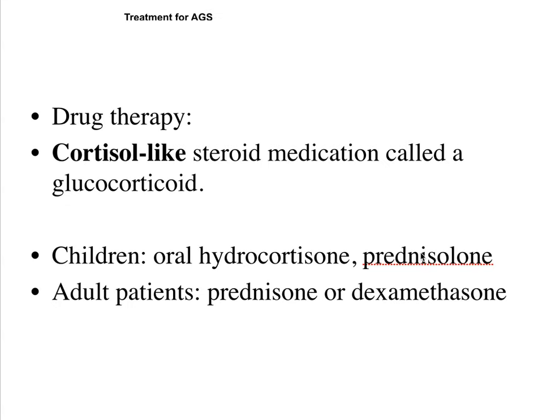In children, we give prednisolone - the active form - because children have underdeveloped livers. In adults, we give prednisolone, which is converted in the liver to prednisolone.